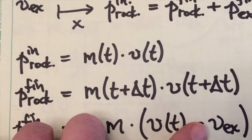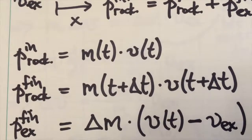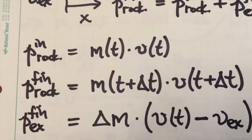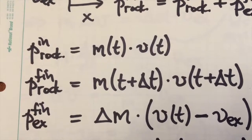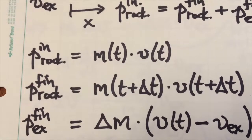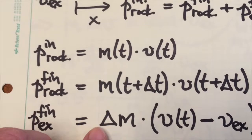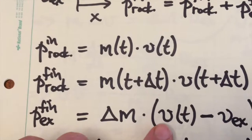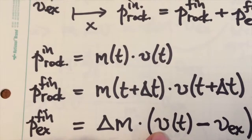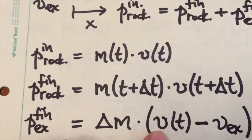This difference here is important because the exhaust velocity is measured relative to the rocket. So the momentum of the exhaust in an inertial frame is the small amount of mass that's been ejected times the velocity measured relative to the inertial frame, not measured relative to the rocket.